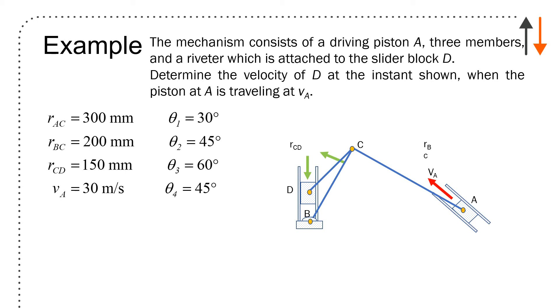What I expect to have happen is that as this slider moves down, this link BC will move up and to the left. And all of this will be driven simultaneously because the slider at A is moving up and to the left.